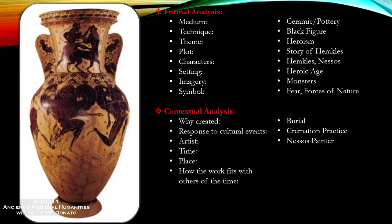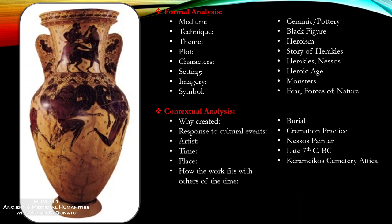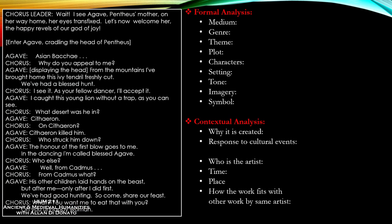The artist is called the Nessos Painter — that's just a name we've come up with because we don't know his actual name, but it's based on this particular work. It dates to the late 7th century and was from the Kerameikos region in Attica, which is right at Athens. Kerameikos is the potter's quarter and also the cemetery area, and this is where we get the name 'ceramics' from. It also shows an influence from an earlier Corinthian style, which affects what's called black figure and the evolution of Greek vase painting.